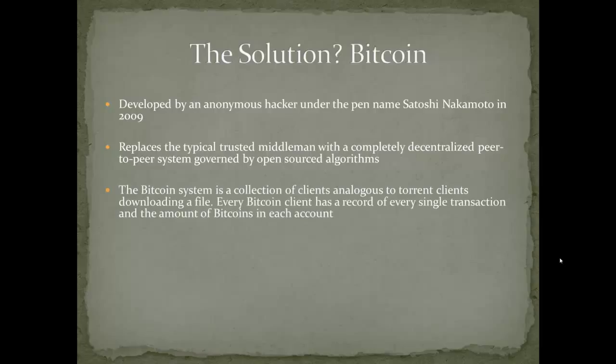The Bitcoin system is kind of like a collection of clients, analogous to torrent clients. If you know what BitTorrent is — think of file sharing like downloading videos or music online where you take pieces and distribute them to many people — Bitcoin is like that. It's a distributed network where at any time the master file, which is a record of every transaction ever made and who owns what inside the system, is owned by every single client.